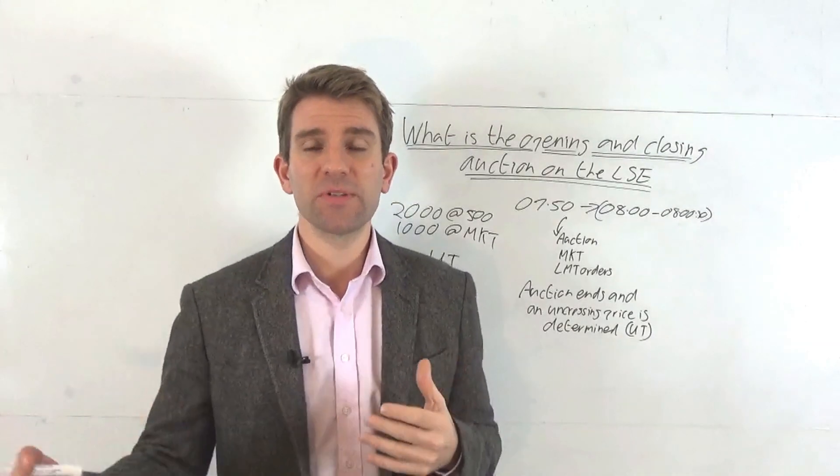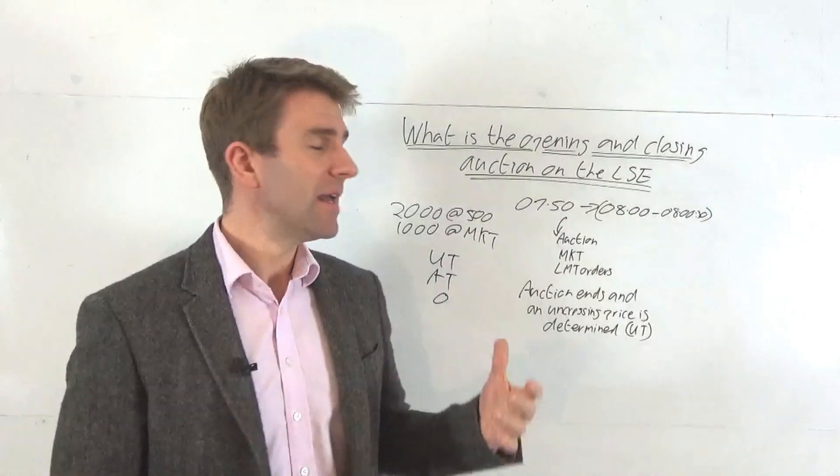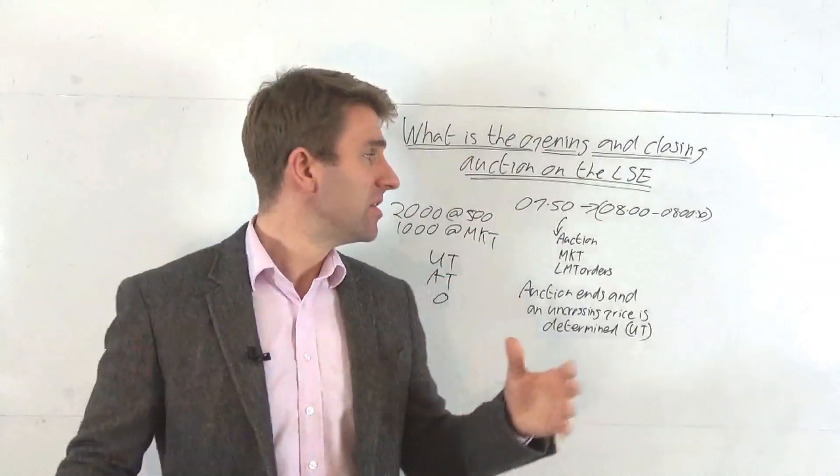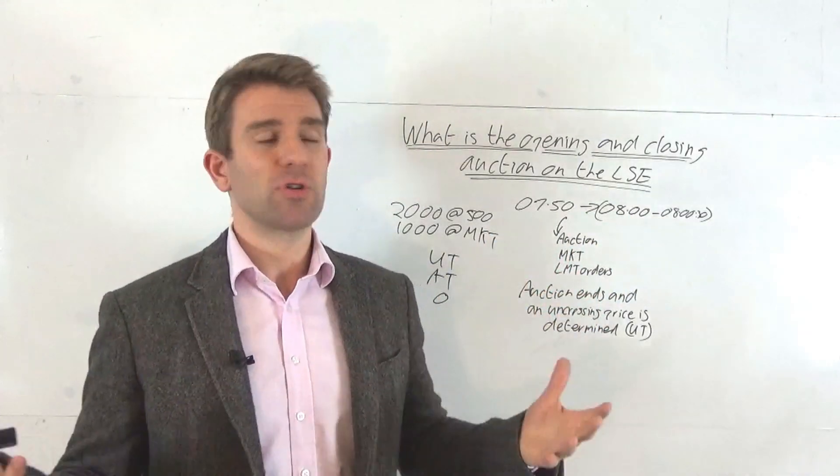So there's always going to be an open. Now if you're trading the FTSE 100, most of the time you're going to have a UT price. You can see the uncrossing, see the orders coming in, then the orders stop coming in and bang - you get your auction price.